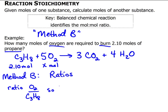The first ratio I write will be from the balanced chemical equation. And that is 5 moles of O2 on the top and, not 2.1, it's 1 mole of C3H8. How in the world did I get that? It is from the balanced chemical equation.